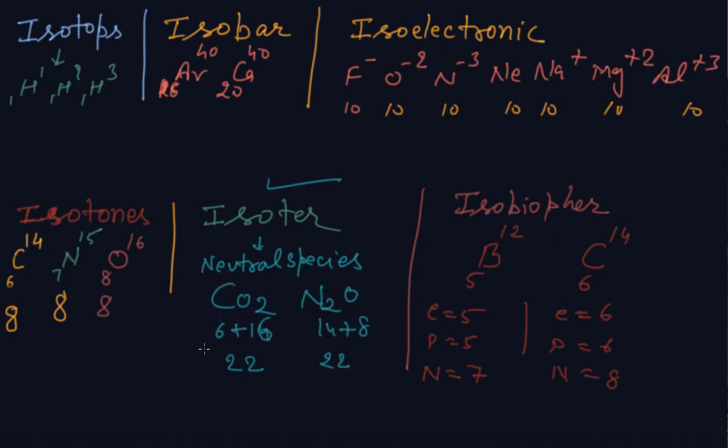And isotone I already explained you, the neutral species having the same number of electrons. CO2 is having 22 electrons and N2O, laughing gas, is also having 22 electrons.